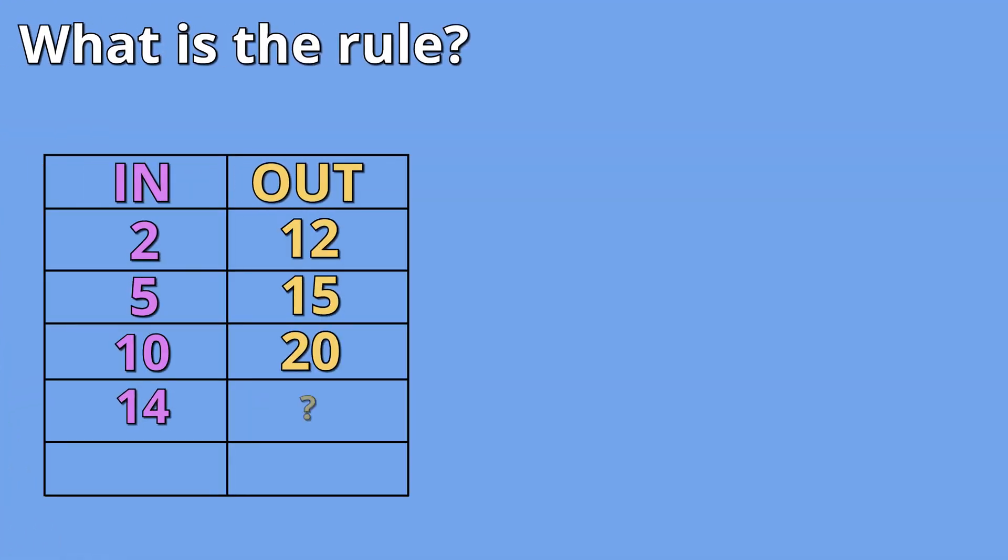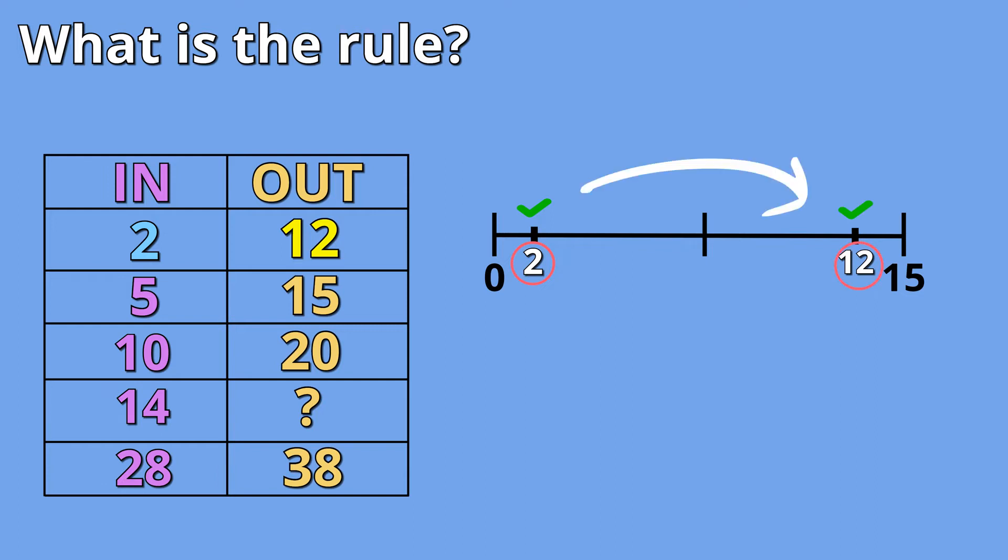So let's find a rule by finding a pattern in our table. Our first number pair is two and twelve. The number two was placed into our machine and the number twelve came out. The first question we want to ask ourselves is did our number get larger or smaller? We started off with a smaller number and the output was a larger number. Our number increased.